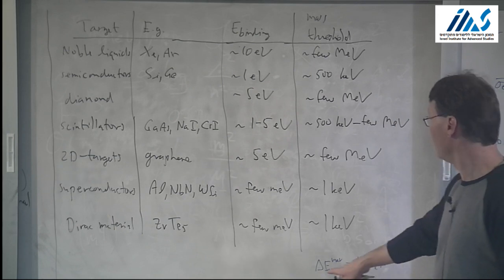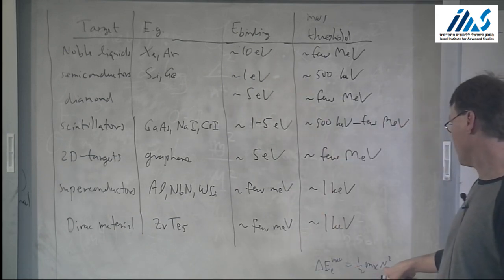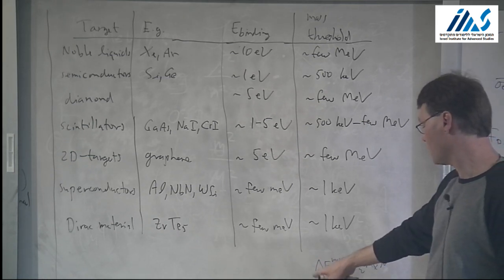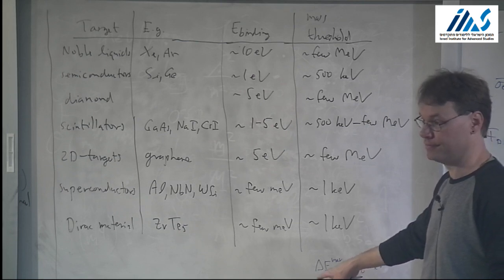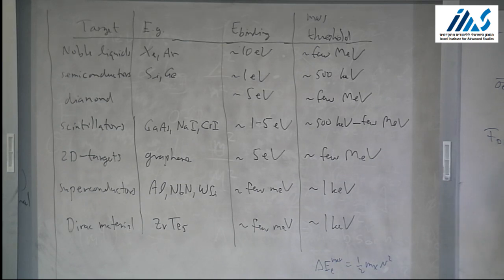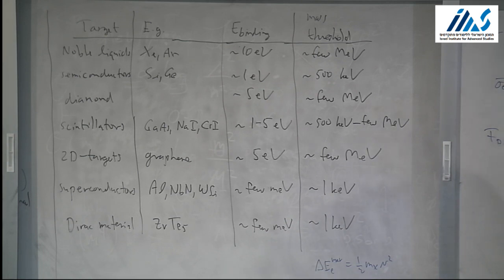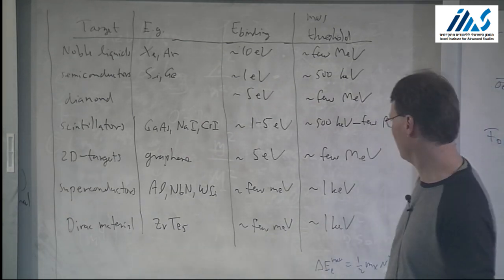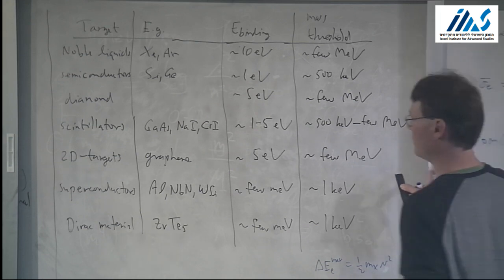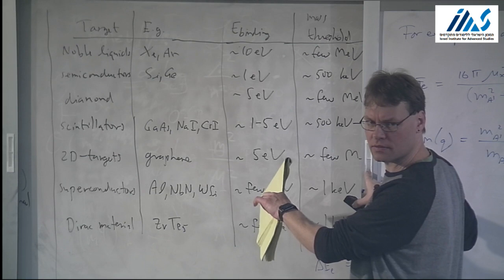On the question of key uncertainties in direct detection: it depends on the mass range. At the lowest masses, you're sitting on the tail of the dark matter velocity distribution, and that tail is quite uncertain — things can change by many orders of magnitude. At high masses, the uncertainty is more like tens of percent. Of course, there are more exotic scenarios like sitting in a void where the uncertainty is large, but for typical assumptions at high mass the effect is modest.